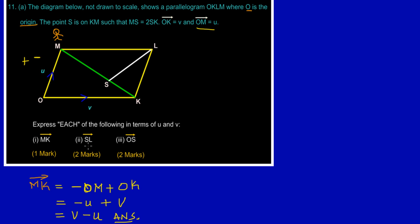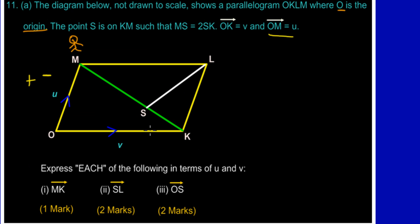Now let's move to part two, where they ask us to find the distance SL. They gave us important information: MS equals 2 times SK. So if we divide MK into equal parts, with MS being twice SK, we can split MK into three equal parts — SK is one part and MS is two parts.